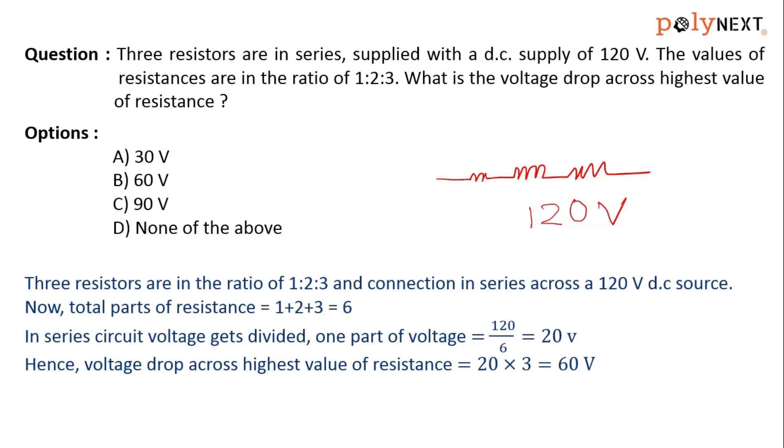Total parts of the resistance is actually six parts. In series circuit, voltage gets divided. As you know, that is called potential division rule. So one part of voltage will be the supply voltage divided by total parts.